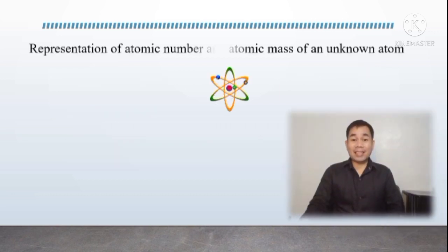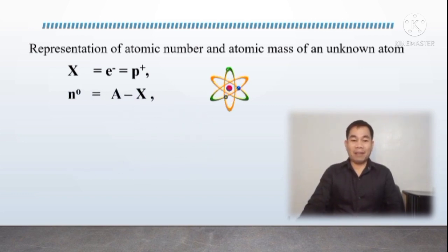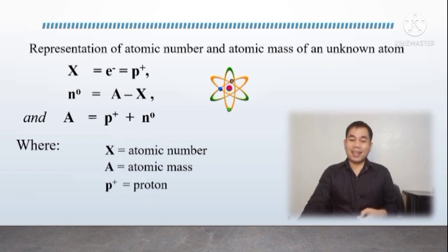This time, let's discuss the representation of atomic number and atomic mass of a known atom through the following equations. The first equation is X = e and also equal to p. We also have n = a - X. And lastly, a = p + n. Where X is atomic number, a is atomic mass, p is for proton, e is for electron, and n is for neutron.